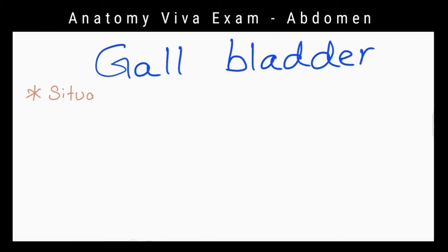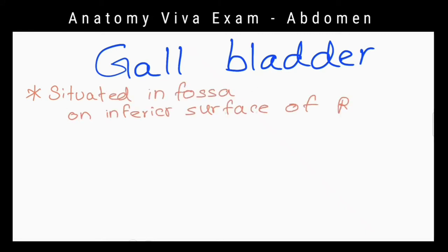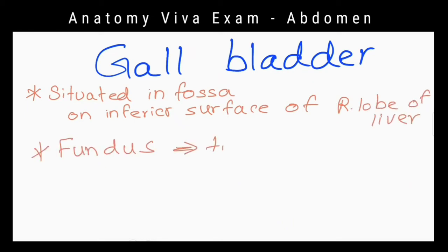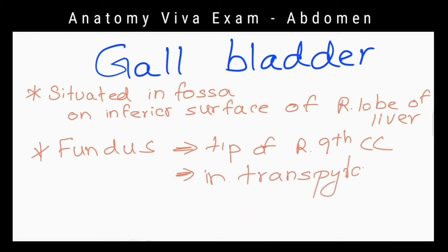What is the location of the gallbladder? It is situated in a fossa on the inferior surface of the right lobe of the liver. The fundus of the gallbladder can be found at the tip of the right ninth costal cartilage in the transpyloric line.